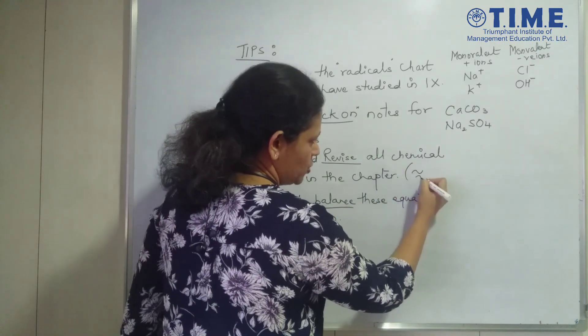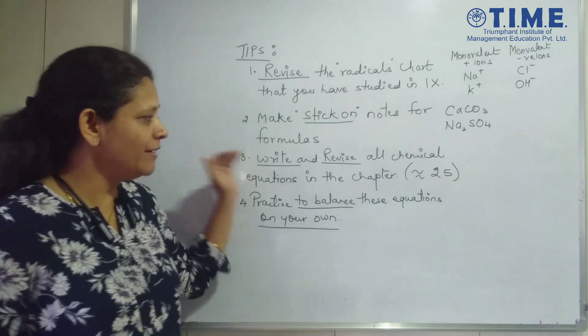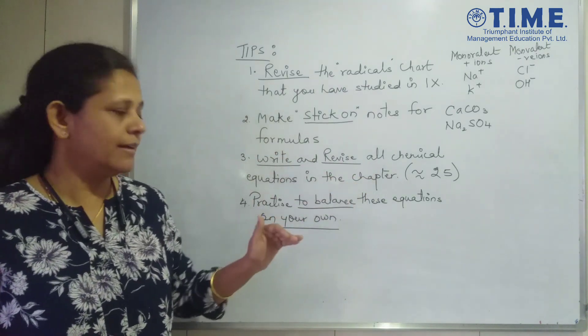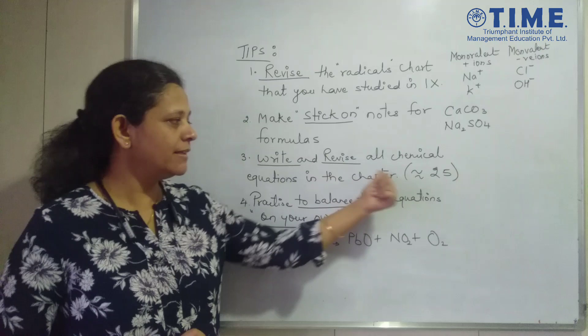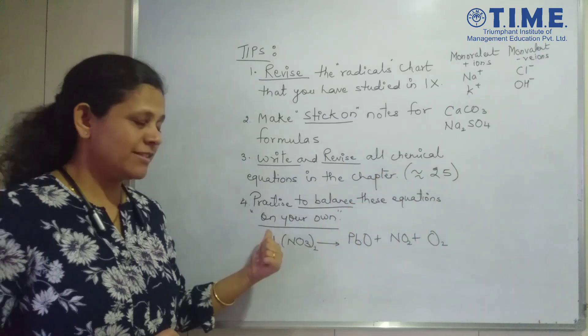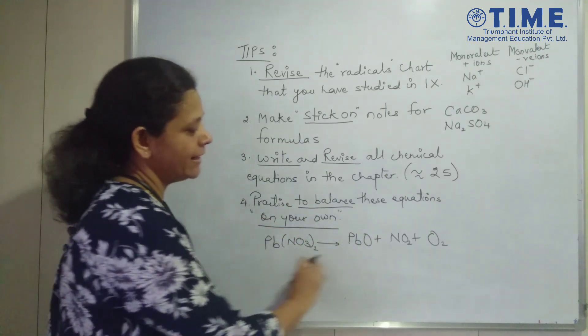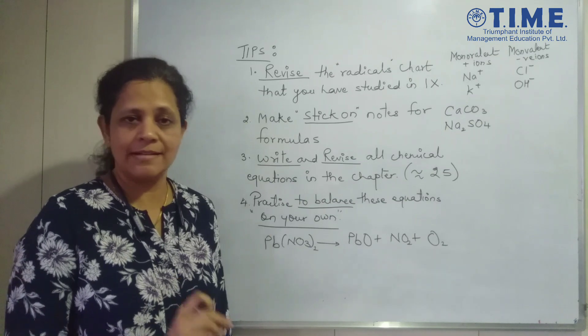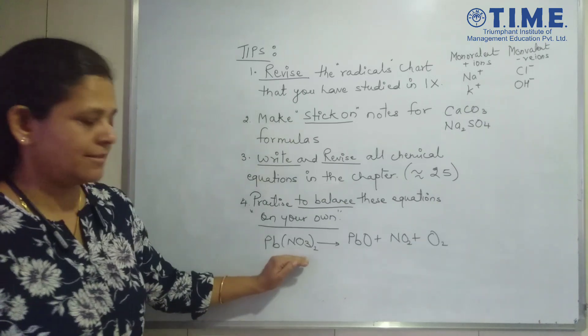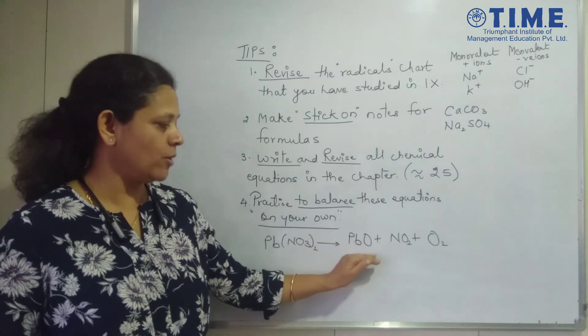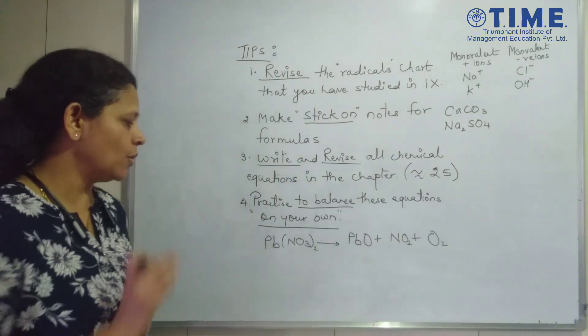Third important thing is write and revise all the chemical equations that are in the given chapter. Now there are around 25 chemical equations. Only 25. So you need to revise the same equations again and again. Then the most important, the fourth point, practice to balance these 25 equations on your own. So you write the equation. There are some tricky equations, some simple equations. So let's say for example, you write this equation that is decomposition of lead nitrate to lead oxide, nitrogen dioxide and oxygen.